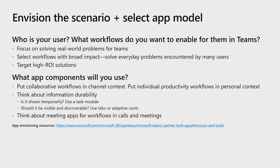Once you know the scenarios, you can create the app model that fits those scenarios. Have a collaborative scenario? Put it in a channel or a meeting context. Is it something for personal productivity? Use a personal app. Think about the durability of the information shown in your app as well. Is it a temporary view? You could use a task module UI element. But if it's something that should be searchable or discoverable in the long run, try using a tab or an adaptive card in the chat.